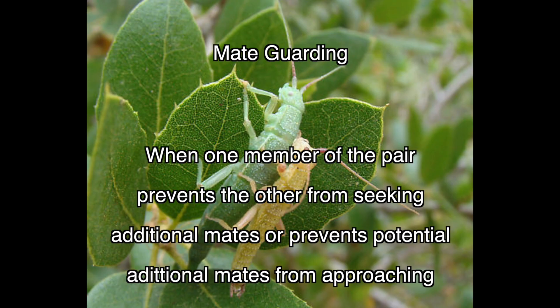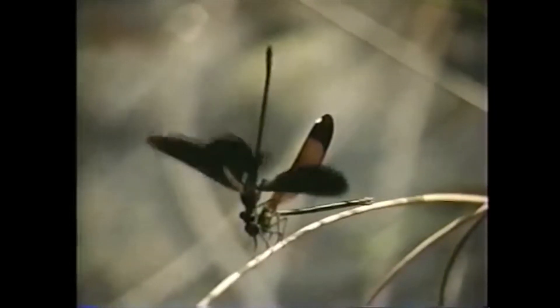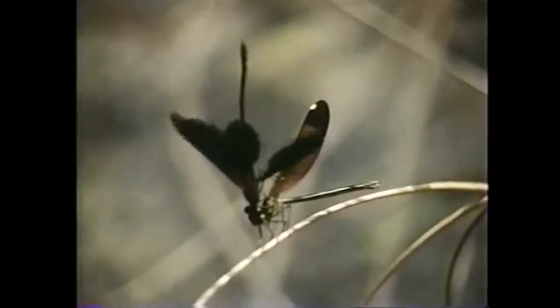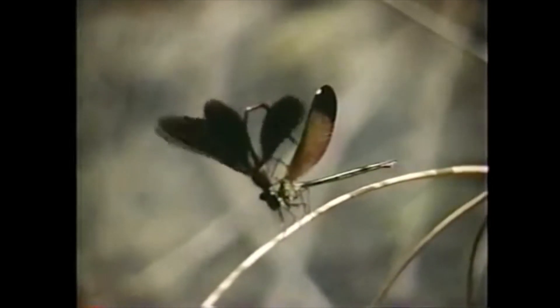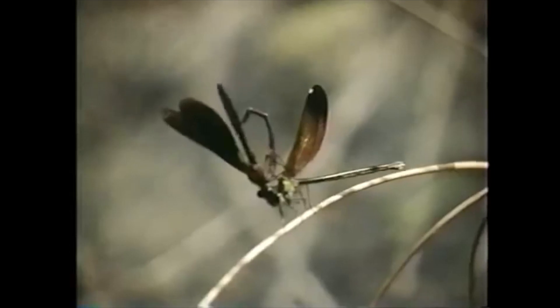Mate guarding occurs at copulation when one member of the pair prevents the other from seeking additional mates, or prevents potential additional mates from approaching. In this video, you will see an example of mate guarding. Here is a male dancefly seizing a female by the neck. He then uses the claspers on his hind end to grip the female in the matching depression behind her head. Rivals typically are unable to pull them apart.